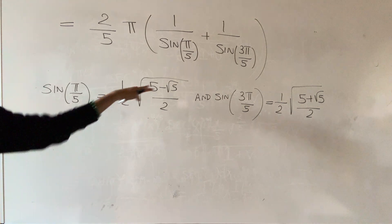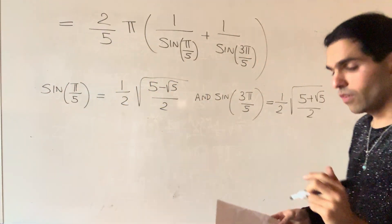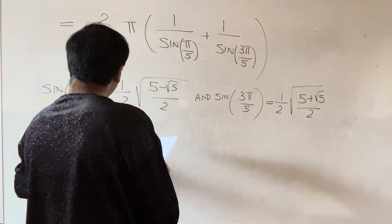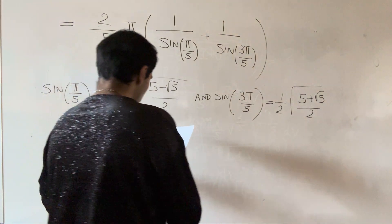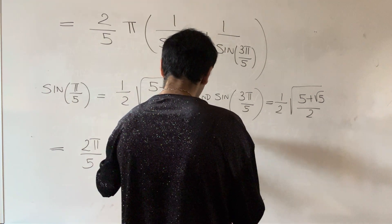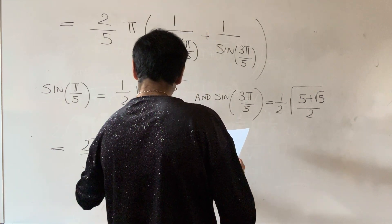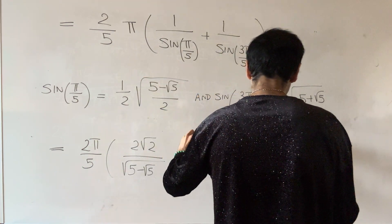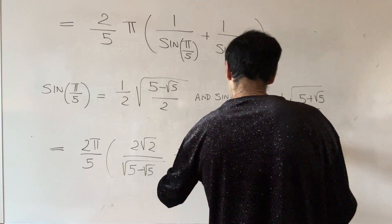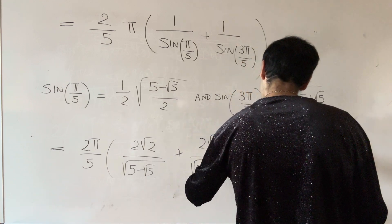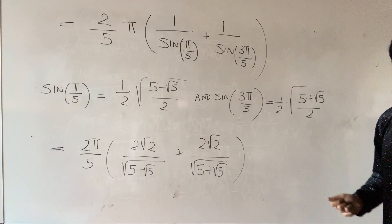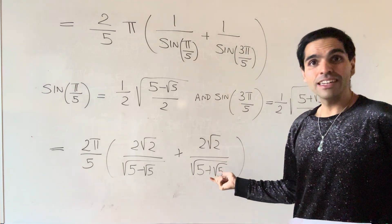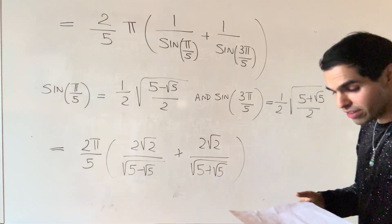So in the end, our integral can be written in terms of all those square roots. Our integral becomes two pi over five, times two square root of two over the square root of five minus square root of five, plus two over square root of two times the square root of five plus square root of five. If you're happy with this answer you can leave it as is, but we can actually simplify it further.